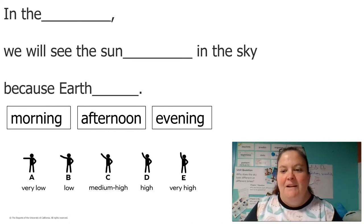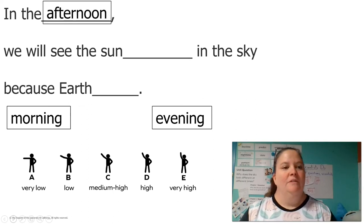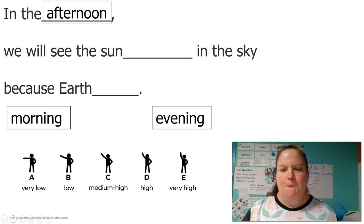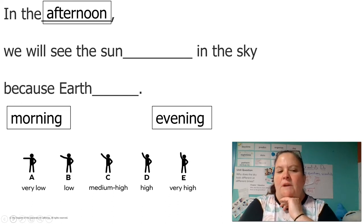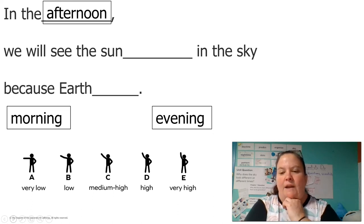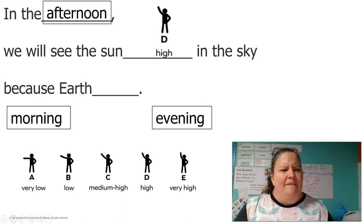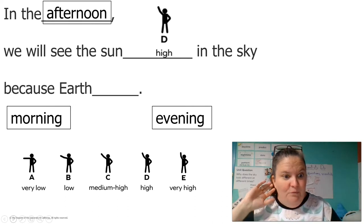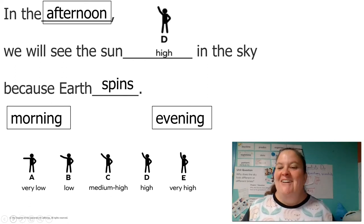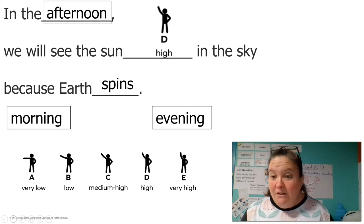Let's do the afternoon next. In the afternoon, we will see the sun — the afternoon, that was after lunch. Where did we see the sun in the afternoon? Very low, low, medium, high, or very high? I said high; you might have said very high, and that would be okay too. In the afternoon, we will see the sun high in the sky, because earth — what does earth do? It spins. In the afternoon, we will see the sun high in the sky because earth spins.